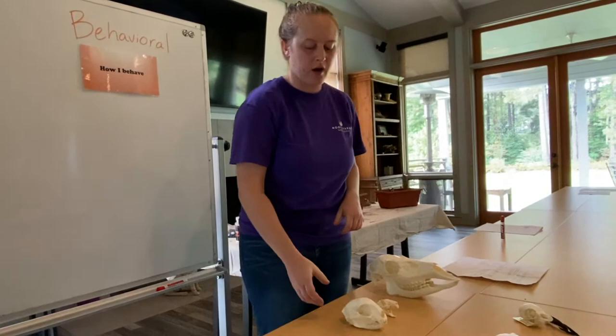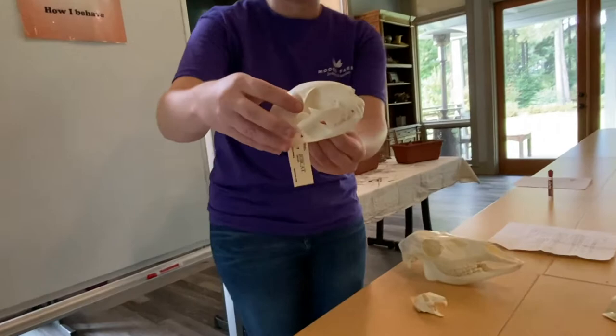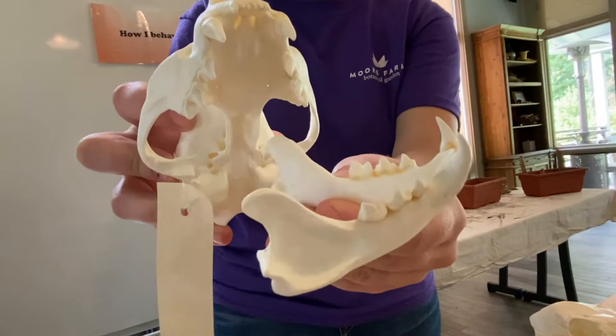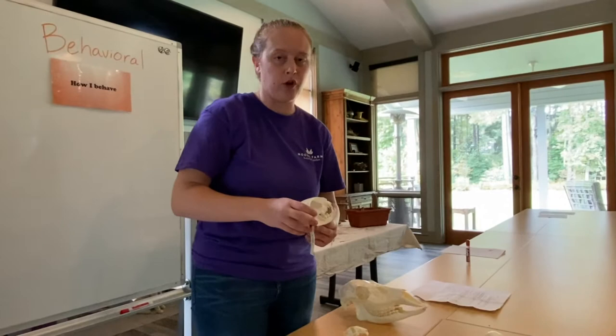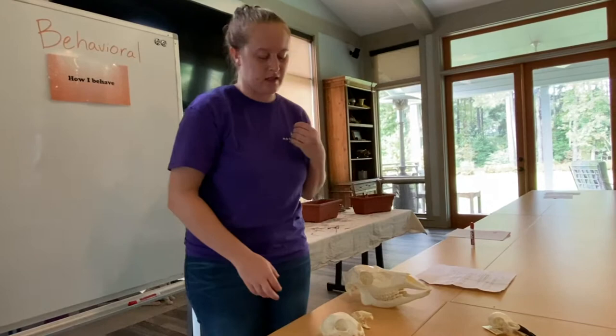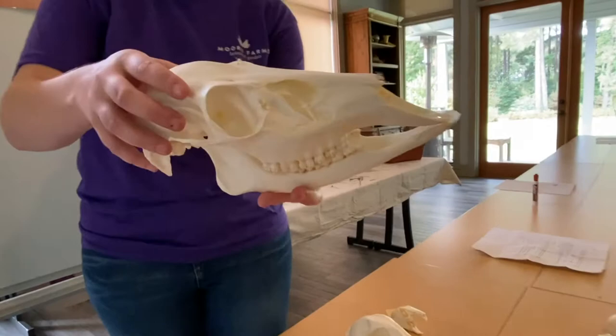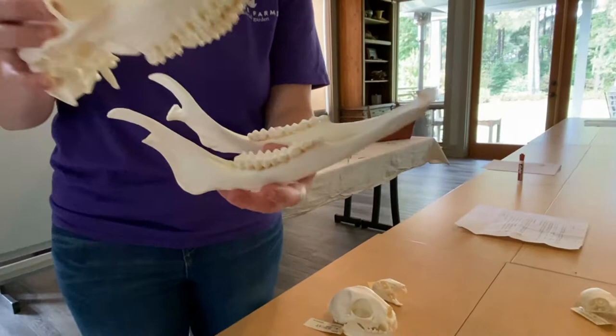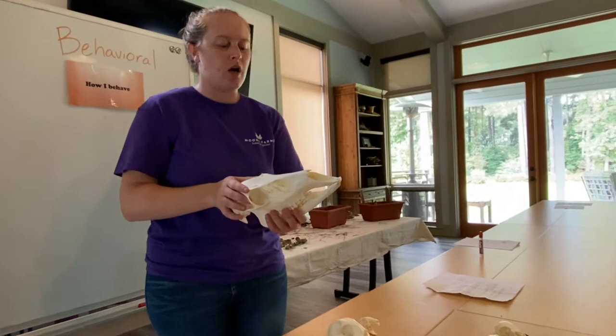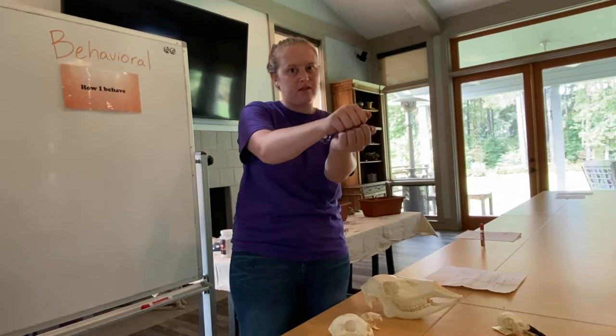Two other skulls I'm going to show you are a carnivore skull for a bobcat and an herbivore skull for a deer. If you look at the teeth of the bobcat, they are very sharp and pointy because this animal is a carnivore — it eats meat and needs to be able to pull and tear, kind of like the owl, and then grind with its back teeth. The deer's teeth are a lot more flat and wide because the deer pulls in plants, shrubs, and bushes — only plant material — and grinds it with its back teeth.